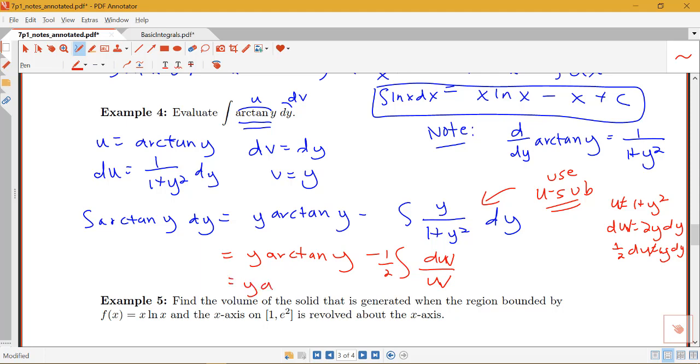So I'm going to have y arctan y minus 1 half, and then the integral of 1 over w would be log of the absolute value of w, and then I will have plus c. So now, because I did do a substitution, I've got to put this back all in terms of y. So we'll have y arctan y minus 1 half log of 1 plus y squared plus c.